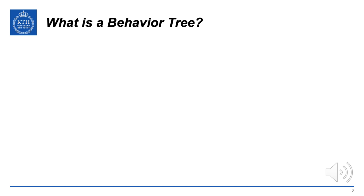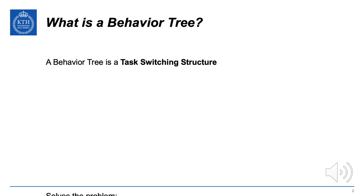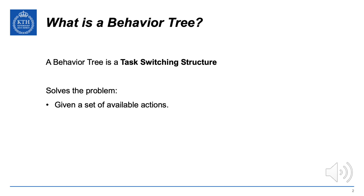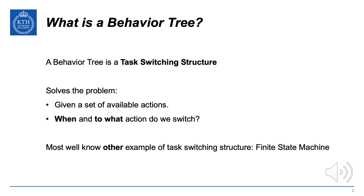A behavior tree is a task switching structure that solves the following problem: given a set of available actions that we want to switch between, when and to what action do we switch? The most well-known other example of task switching structures is a finite state machine. Now we're going to look at the advantages of behavior trees.